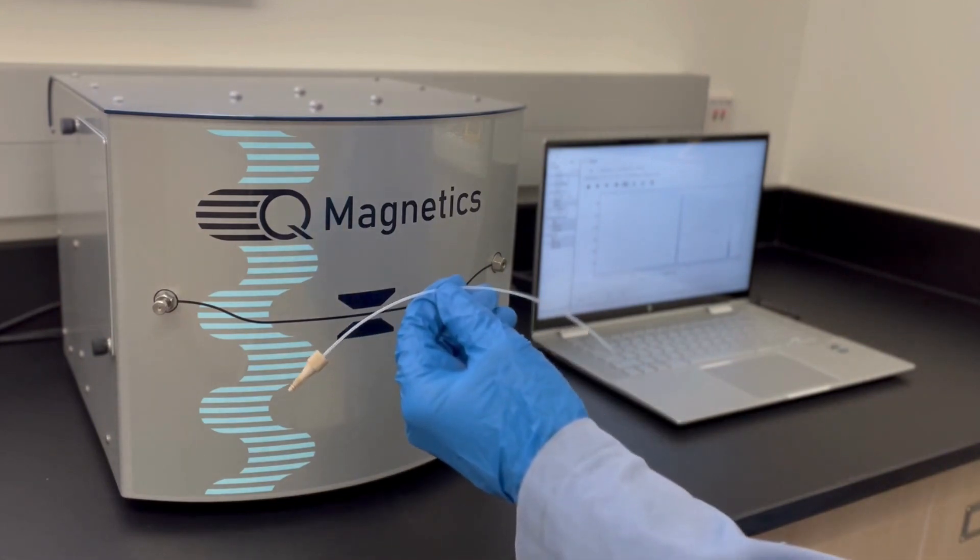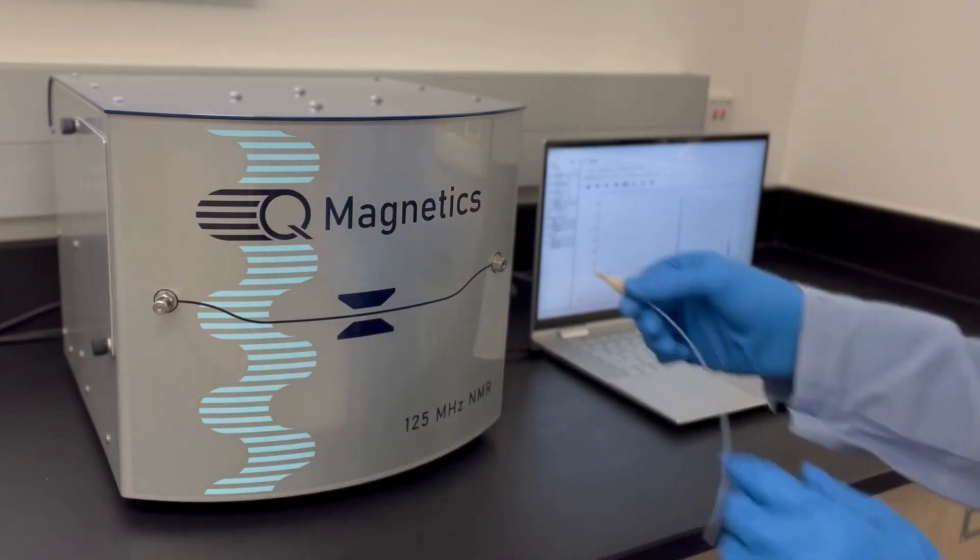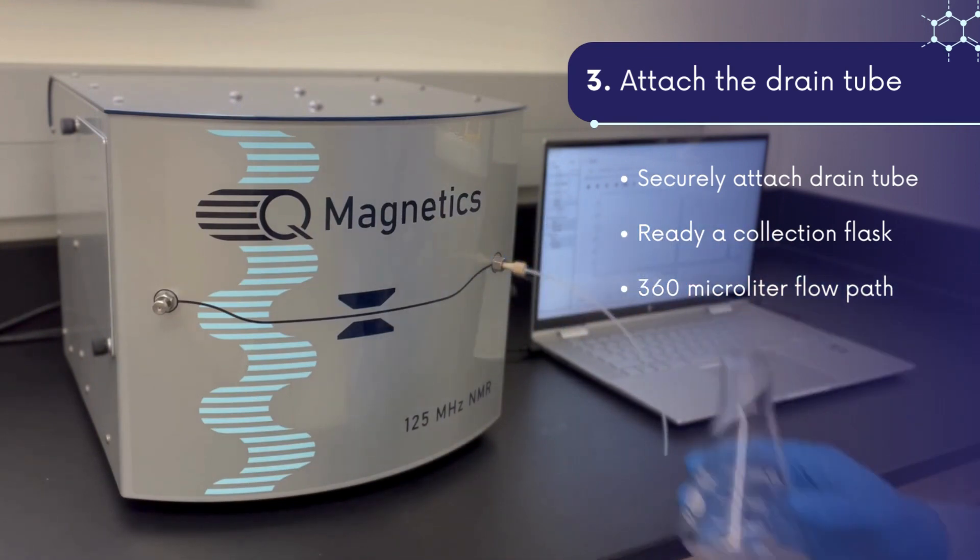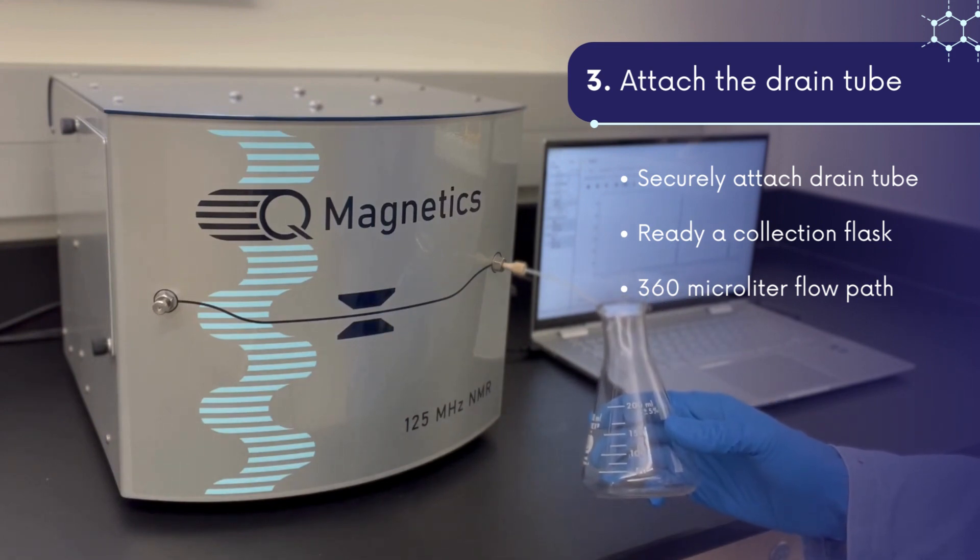Next, secure the drain tube to the other front panel fitting. When sample is injected, the drain tube will allow excess volume to run through the flow path and can be recollected or disposed into a collection flask such as this Erlenmeyer.